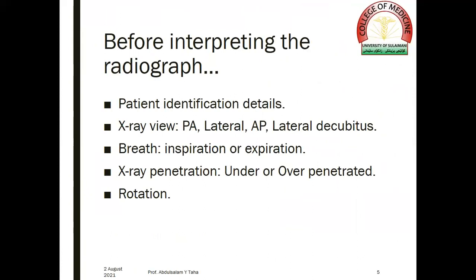Before interpreting the radiograph, we have to pay attention to the patient identification details, like the name of the patient and the date of taking the chest radiograph. The x-ray view — we have four views: the PA, lateral, AP, and lateral decubitus views. The state of breathing, whether the patient is in inspiration or expiration. The x-ray penetration, whether the film is underexposed or overexposed. And finally, the state of rotation of the patient.